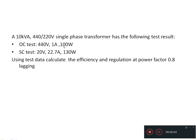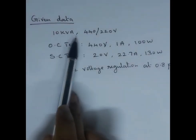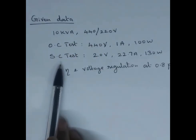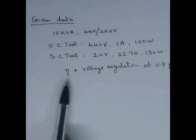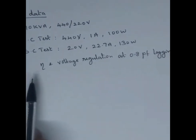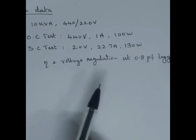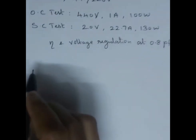Generally, OC test gives us iron loss and SC test gives us copper loss. In this problem, the given data is a 10 kVA transformer with primary and secondary voltages. Both OC test and SC test are conducted on the high voltage side. We have to find efficiency and voltage regulation at 0.8 power factor lagging.